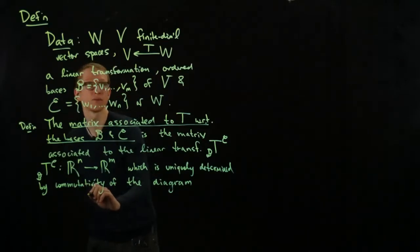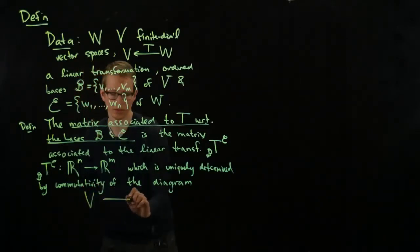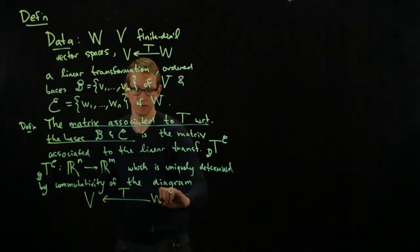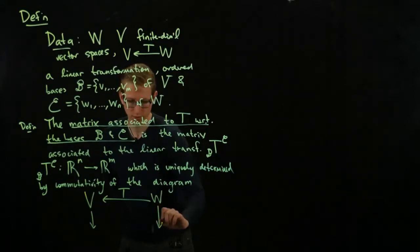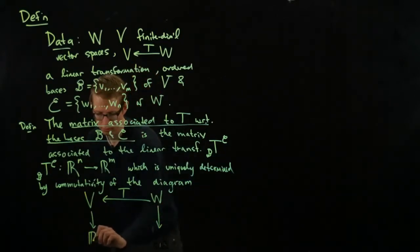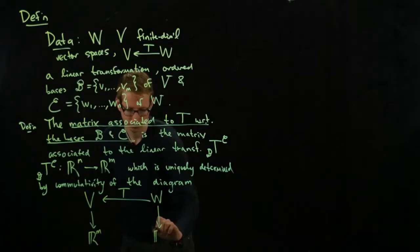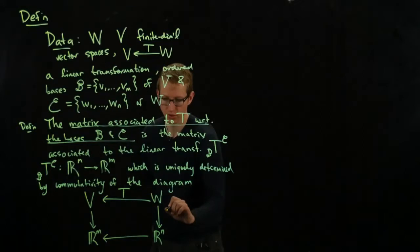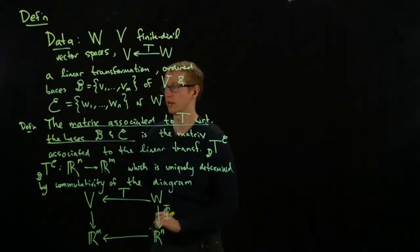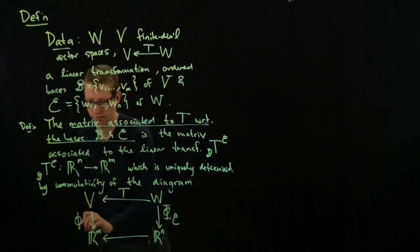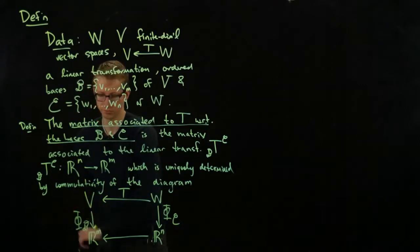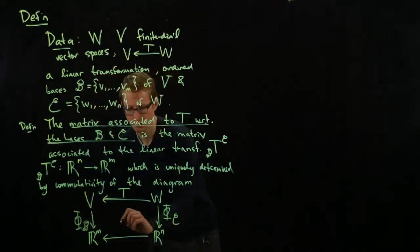And similarly, I can do the same thing for the basis C for the vector space W. So the diagram here is, we have our vector space V, we have our linear transformation T, W, and we have our choice of basis. And let me just call this phi subscript, let's see, it's C, and this is phi subscript B. And here this linear transformation is T_B^C.